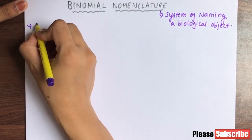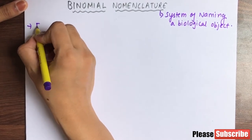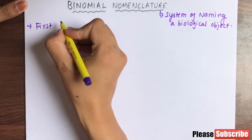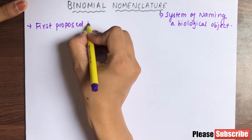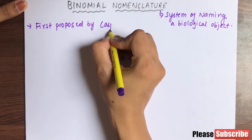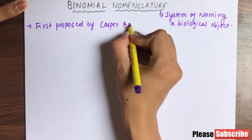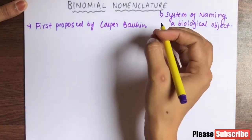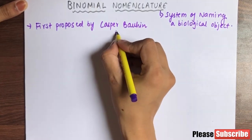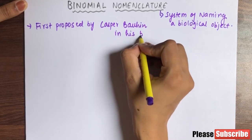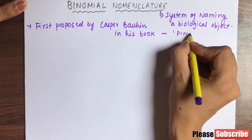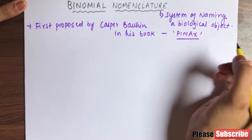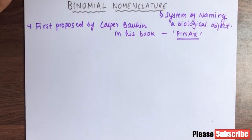It was first proposed by Casper Bauhin. The scientist's name is Casper Bauhin, and he described it in his book. The name of that book is Pinax.